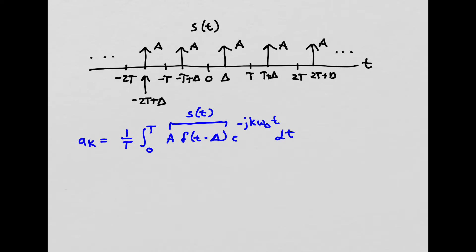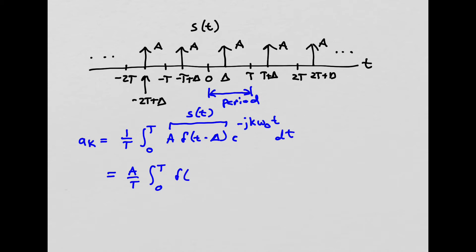I've recopied this integral and substituted in the value of s(t). I'm integrating over the period from 0 to T. The amplitude A pulls outside, giving me A/T times the integral from 0 to T of δ(t − δ) times e^(−jkω₀t) dt.